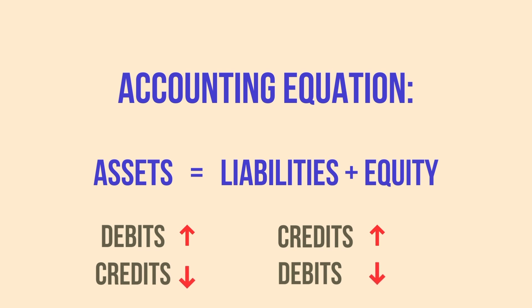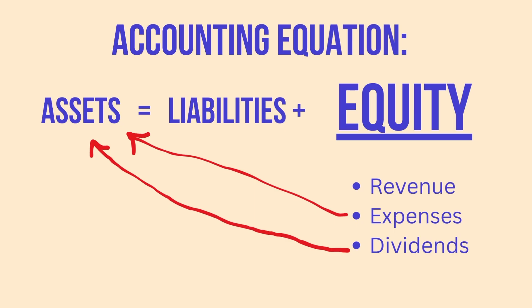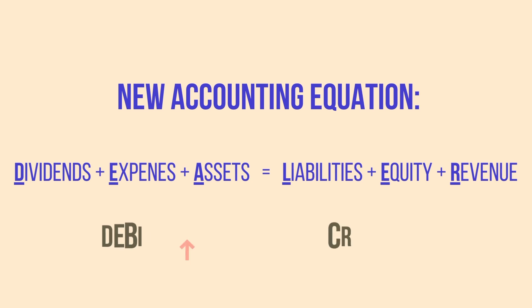Let's make it even easier to remember by expanding the accounting equation one step further. Equity, in addition to owner's contributions, includes revenue, expenses, and dividends. Expenses and dividends reduce owner's equity, which means these accounts are increased by debits. We can move them to the other side of the accounting equation to help us remember the rules. The new equation is: dividends plus expenses plus assets equals liabilities plus equity plus revenue. Every account will fall under one of these labels, and the same rule holds: debits on the left increase the accounts and credits on the right increase the accounts.